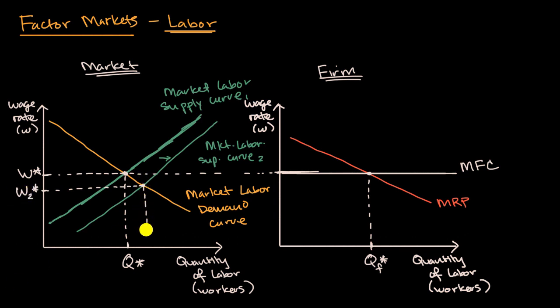And then we have a higher equilibrium quantity of labor. So Q sub two, I'll put a star right over there.